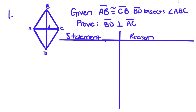Today we're going to talk about proving lines are perpendicular. We haven't done any proofs yet proving that lines are perpendicular, but we've talked about what perpendicular lines mean: they intersect to form right angles and have opposite reciprocal slopes. Today we're going to use the fact that they intersect to form right angles to prove that BD is perpendicular to AC. We're given that AB equals CB, and that BD bisects angle ABC.